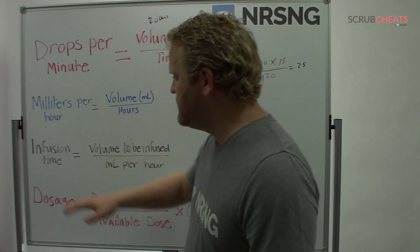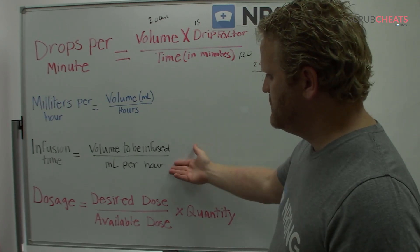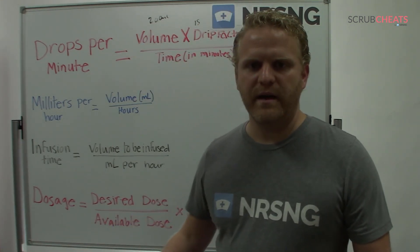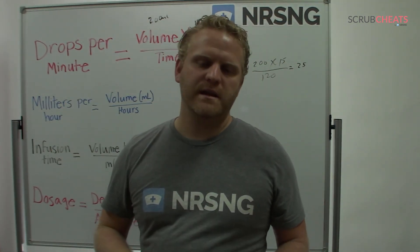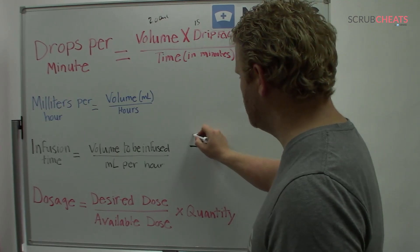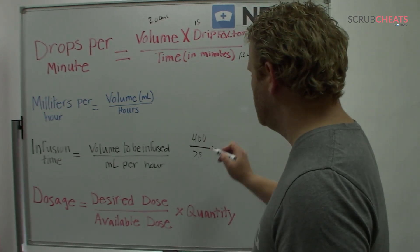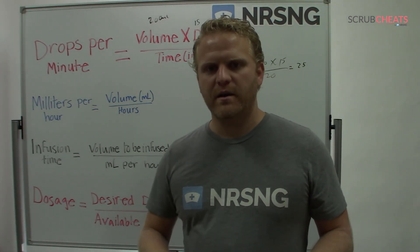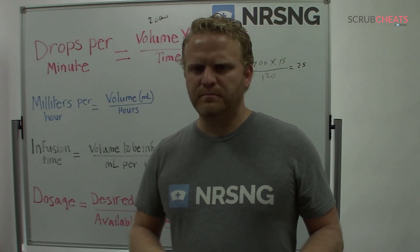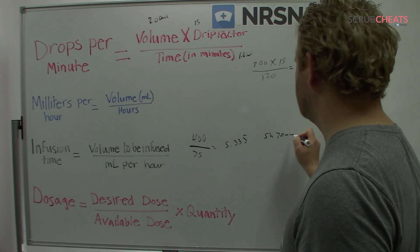To find infusion time, all you do is look at how much you have to give and how fast it goes — then you'll know how long it takes. For example: how long would it take to infuse 400 milliliters at 75 milliliters per hour? Dividing 400 by 75 gives about 5.33, which comes out to about five and a third hours, or about five hours and 20 minutes.